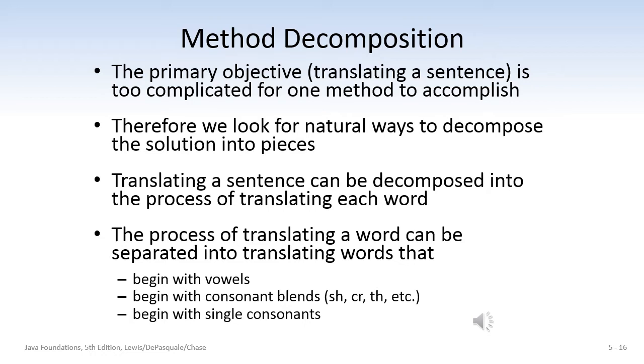So the primary objective, which is to translate a sentence in English to Pig Latin, is too complicated for one method to accomplish. Therefore, we look for natural ways to decompose the solution, break it into smaller pieces. Translating a sentence into Pig Latin can be decomposed into the process of translating each word included in that sentence. The process of translating a word can be separated into translating words that begin with vowels or begin with consonant blends like 'sh', 'ch', 'th', et cetera, or begin with single consonants. Next, we're going to take a look at the coded solution for this.